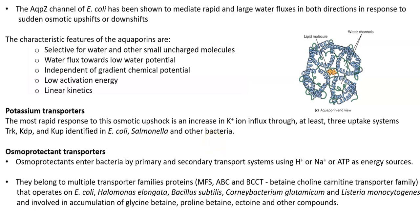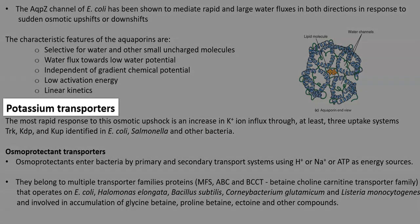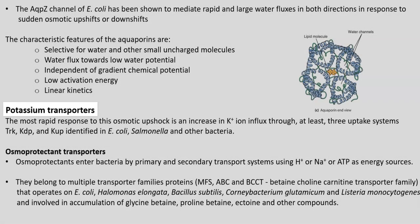The next mechanism to balance osmotic shock is potassium transporters. The most rapid response to an osmotic upshift is an increase in potassium ion influx through at least three different types of uptake systems — the TRK, KDP, and KUP systems — that have been identified in E. coli, Salmonella, and other groups of bacteria.